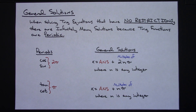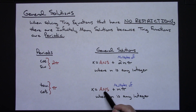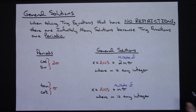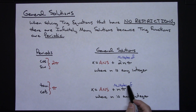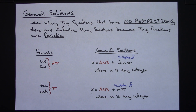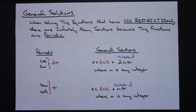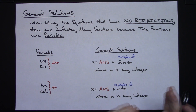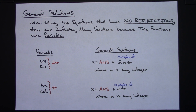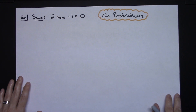For tangent and cotangent, you can calculate at least one answer and then write the general solution by adding nπ, where n is any integer. So: if they say solve the equation with no restrictions whatsoever, you always write general solutions. If they say solve on the interval from 0 to 2π, then you find every numerical answer that falls in that specific interval.